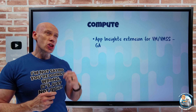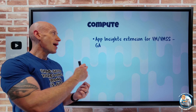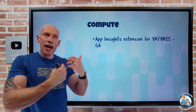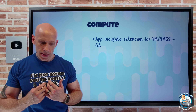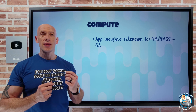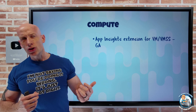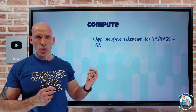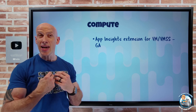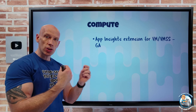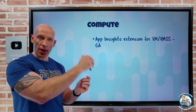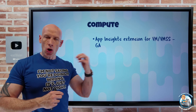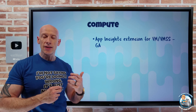For virtual machines and virtual machine scale sets, we now have the App Insights extension. App Insights gives us that intelligence into our applications. Historically, we think of App Insights with App Services, with Functions, with maybe AKS. It has an auto-instrumentation mode — it used to be called Codeless Attach — meaning I don't have to modify my code to include a certain SDK to get this information. Instead, at runtime, this agent just hooks into .NET or J2EE for Java Enterprise Edition applications.